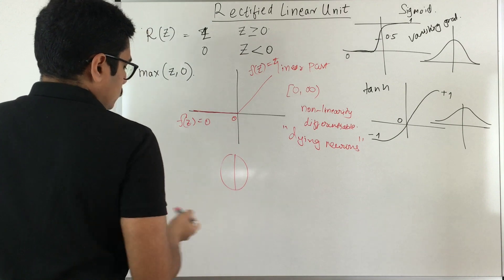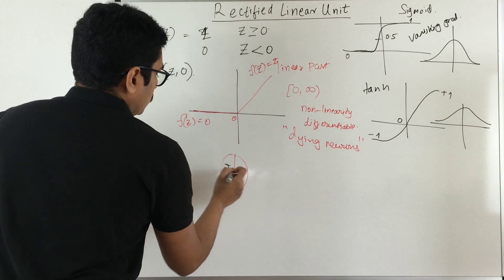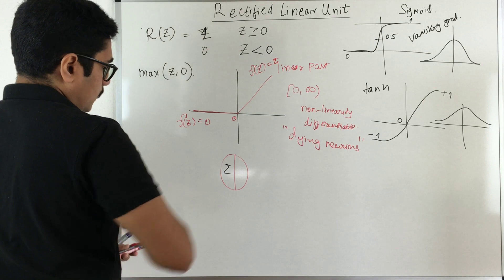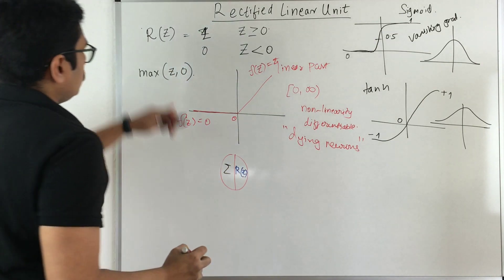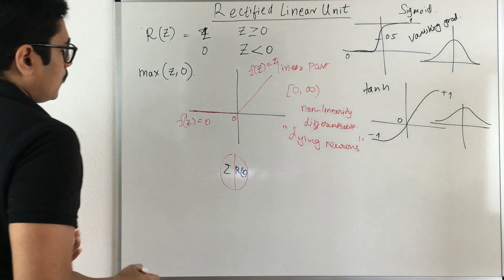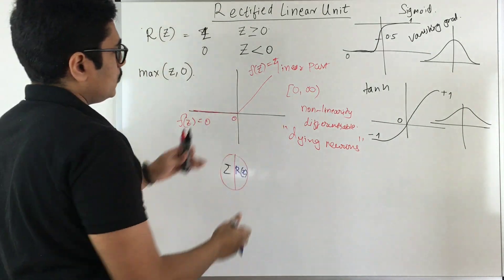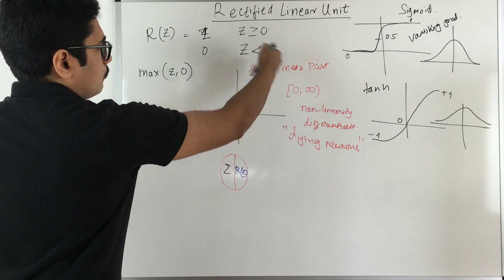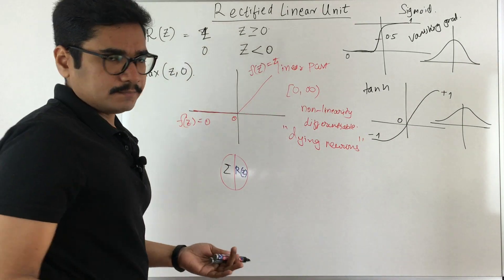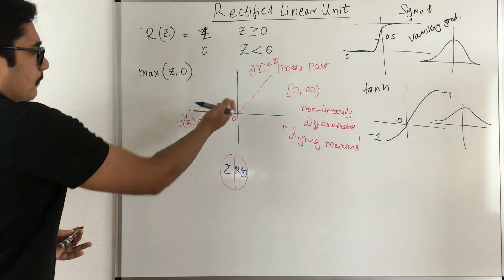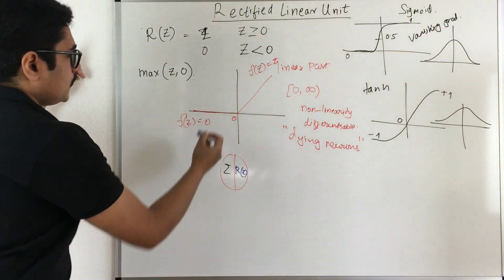So say this is our unit and here we have our linear part, linear computation, and say here we are computing the R z, that is the ReLU of this. Now what happens is that when you take the derivative of this, whatever portion is there on this linear side that becomes differentiable.